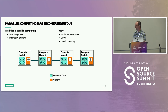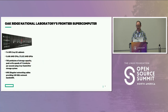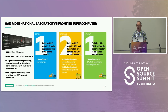Some people think supercomputing is dead — people say, 'Oh, you used to work for Cray, weren't they the ones that built systems that filled rooms?' The answer is yes, we still do that, we're just doing it at HPE now. This is the Frontier supercomputer recently installed at Oak Ridge National Laboratory. It has 74 Cray cabinets, over 9,000 CPUs and 37,000 GPUs for a total of 8 million cores — the first computer to sustain an exaflop, currently number one on the Top 500 list.